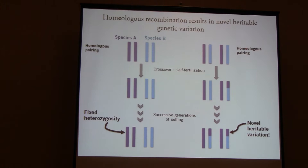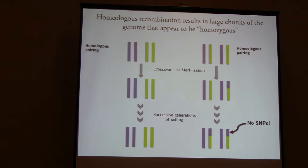Homeologous recombination: basically on the left you have species A and species B. If chromosomes of species A always pair and you have a recombination event between them, nothing happens — you don't generate any new genetic variation. If on the other hand you have homeologous pairing, you get novel heritable variation. This has actually been demonstrated in synthetic Brassica polyploids and naturally occurring cotton and Tragopogon allopolyploids. Homeologous recombination results in a signal visible in whole genome sequencing — in other words, there will be no SNPs in that region, and you'd infer a large chunk where a homeologous recombination event occurred.